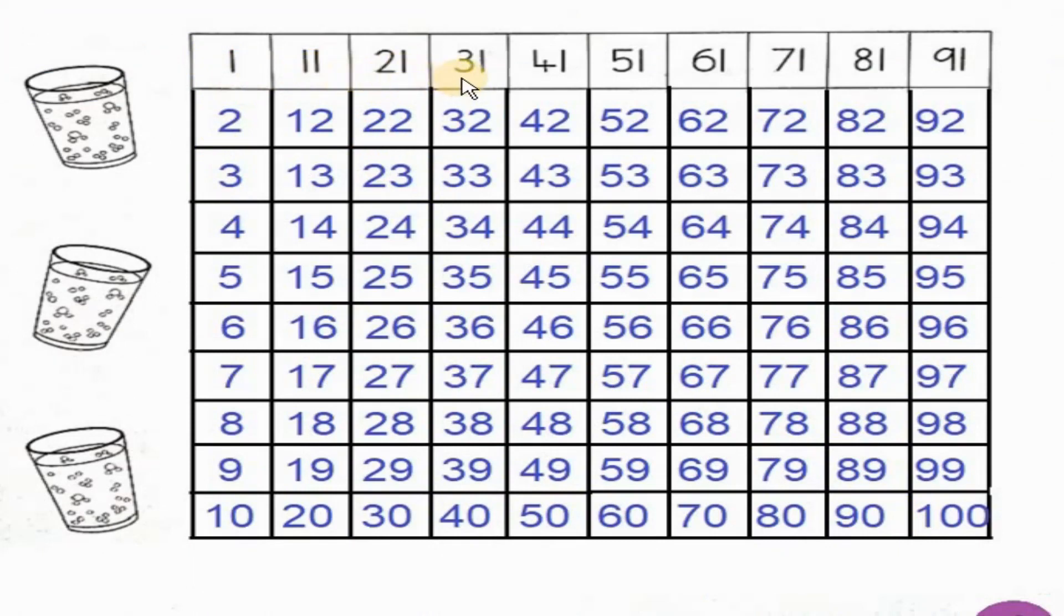1, 11, 21, 31, 41, 51, 61, 71, 81 and 91. Now let's start filling the missing numbers. So 1, so after 1 it is 2, 3, 4, 5, 6, 7, 8, 9, 10.